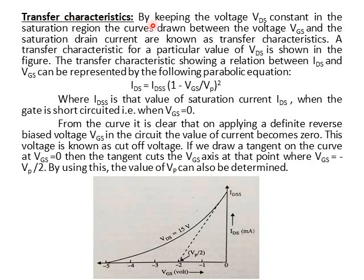Transfer characteristics: By keeping the voltage VDS constant in the saturation region — where ID remains constant for varying VDS — we take a fixed value of VDS. The curves drawn between the voltage VGS and the saturation drain current IDS show how IDS varies with VGS.